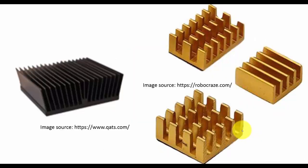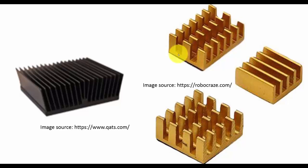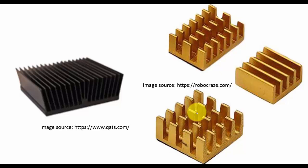Let us see what types of heat sinks are available. There are different types with different configurations. Here you can see fins that are parallel; here are arrangements with a pin-like structure; here you can see a straight path, whereas in this pattern the path is staggered. Each and every configuration has its own merits and demerits, so we must understand the physics behind them.